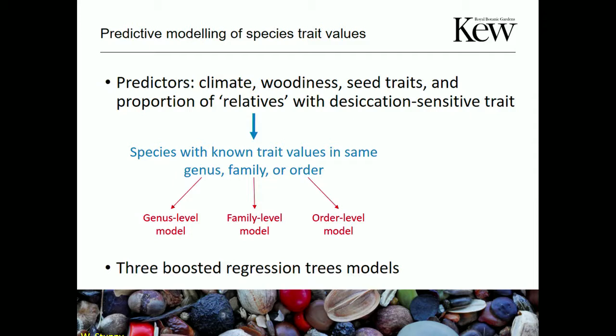We produced three versions of the taxonomic relative variable: proportion within the same order, same family, and same genus. Three models total. We used boosted regression trees — a machine learning technique.